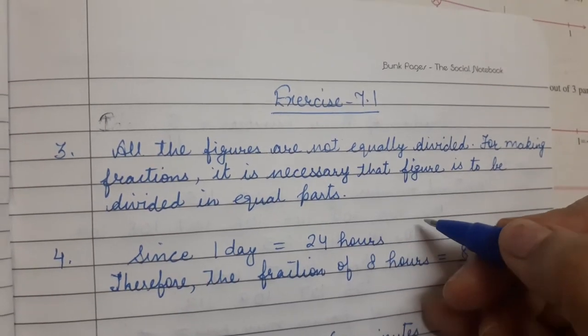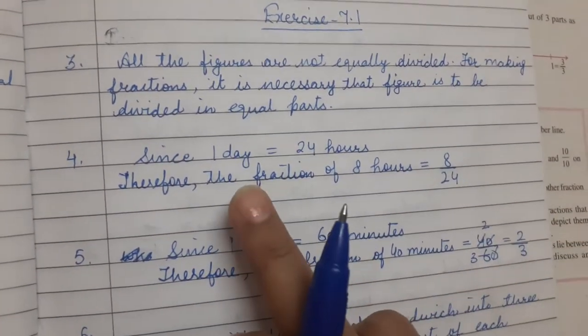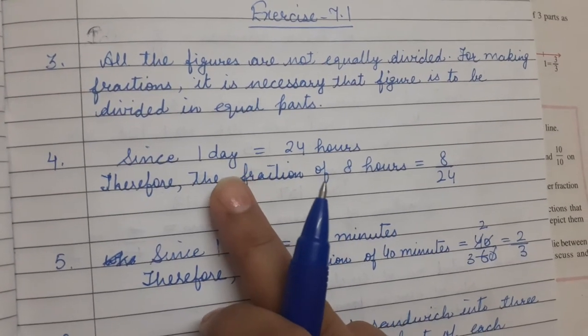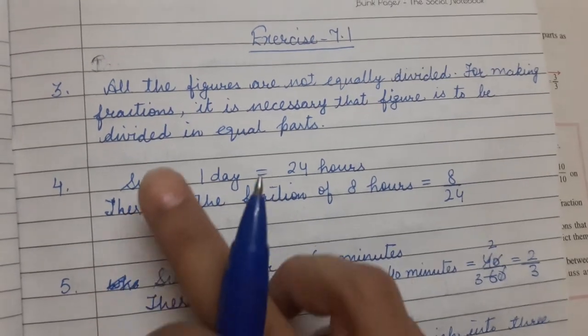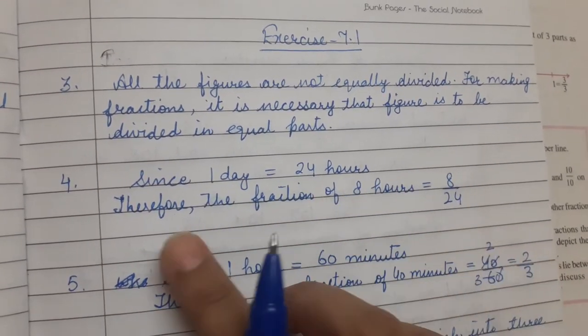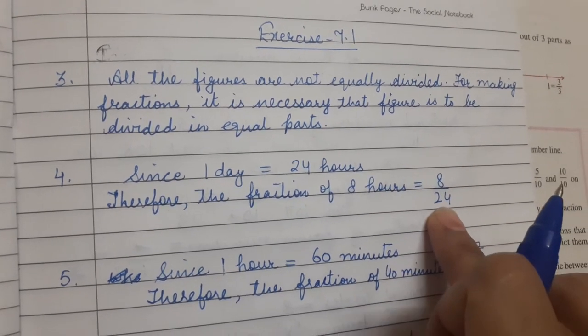Now fourth question: what fraction of a day is 8 hours? Since 1 day is equal to 24 hours, therefore the fraction of 8 hours is equal to 8 by 24.